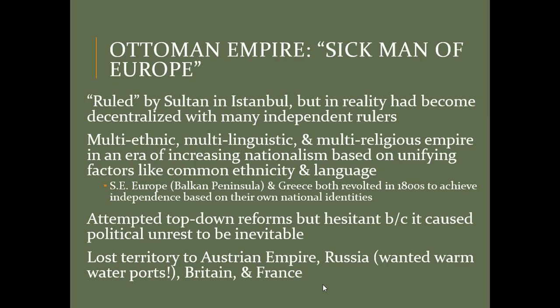The Ottomans are multi-ethnic, multilinguistic, and multi-religious — the millet system allowed various religious groups to follow their own religious laws as long as they gave allegiance to the sultan. But in an era of increasing nationalism based on common ethnicity, language, and religion, the Ottoman Empire will have huge problems. Southeast Europe — the Balkan Peninsula, including modern-day Serbia and Greece — revolts in the 1800s to achieve independence, with those national identities bound up in being Christian, whereas the Ottoman Empire is predominantly Islamic.